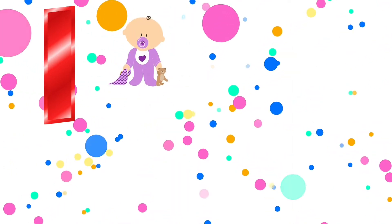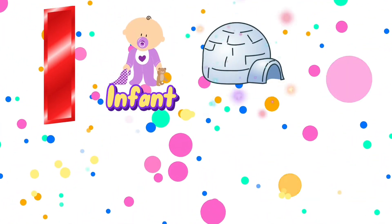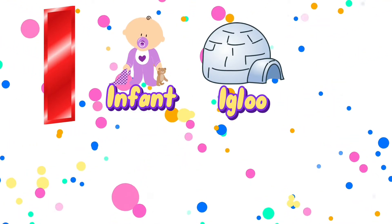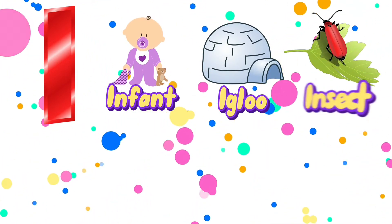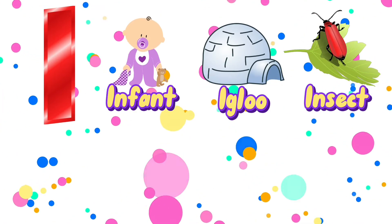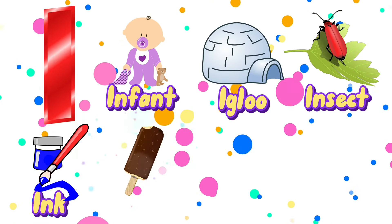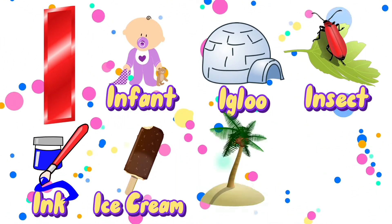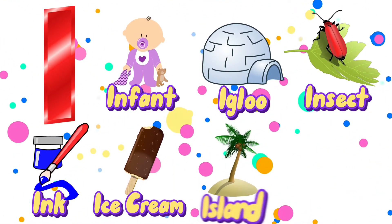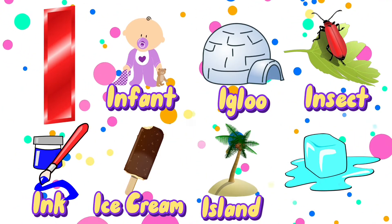I is for infant, igloo, insect, ink, ice cream, island, ice.